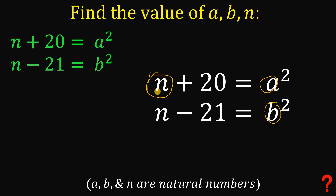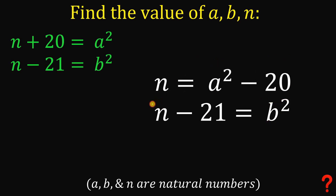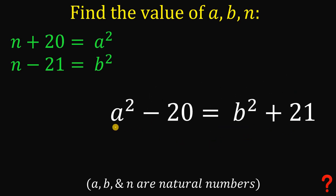If we subtract 20 from both sides of the first equation, n equals a squared minus 20. If we add 21 to both sides of the second equation, n equals b squared plus 21. Since both expressions equal n, we can equate them: a squared minus 20 equals b squared plus 21.